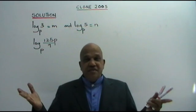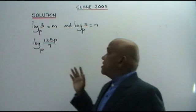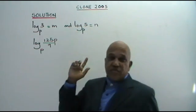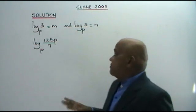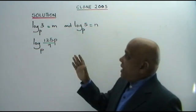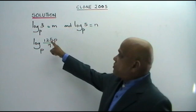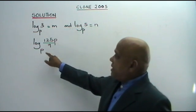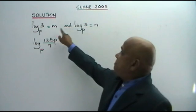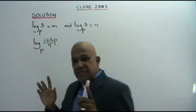Hi! Here I have for you a clone question based on the year 2005. Express log 125P over 9, base P, in terms of M and N.